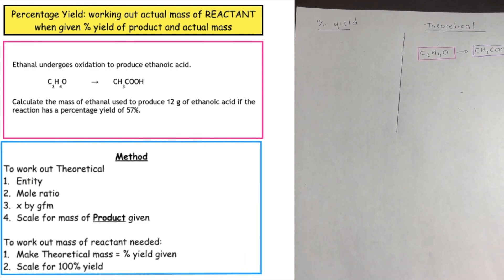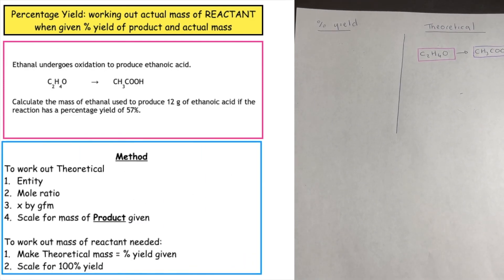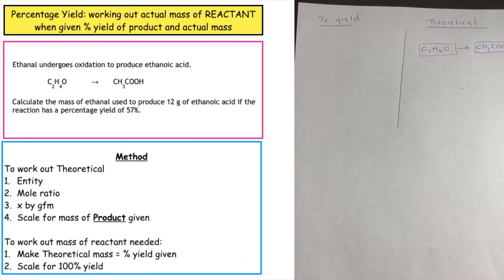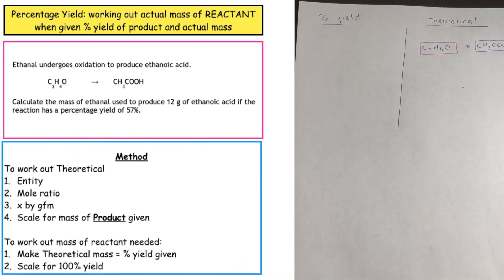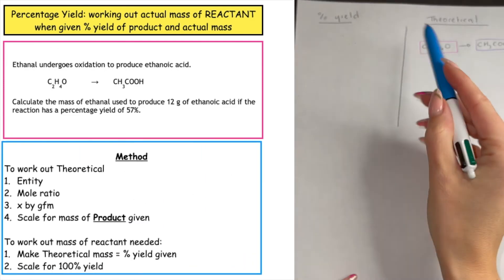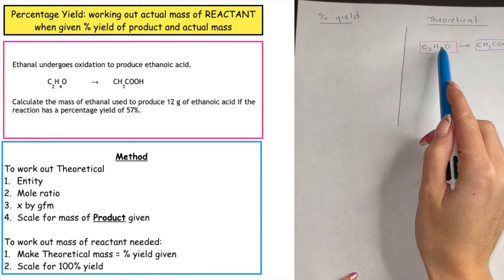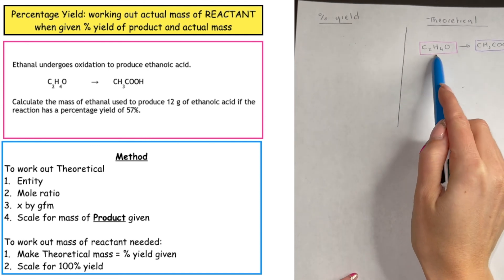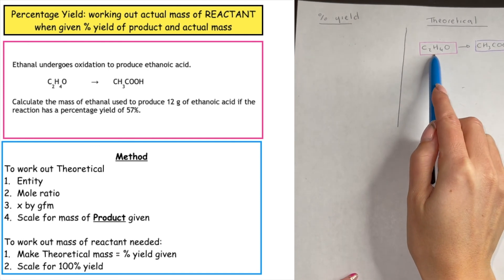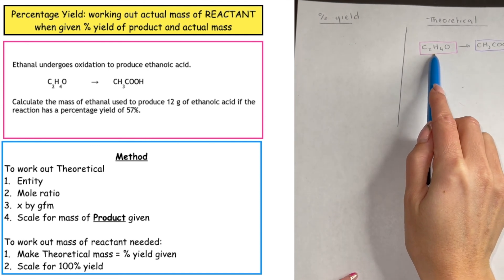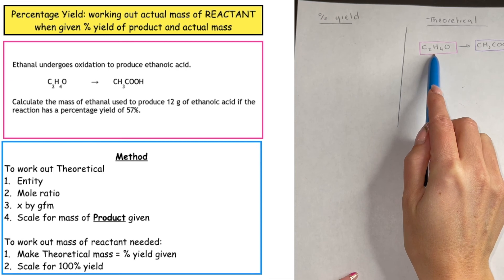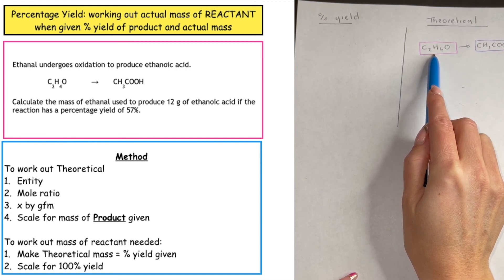In today's video we are going to be looking at percentage yields, but this time we're going to be working out the actual mass of reactant that we need when given a percentage yield of the product and the mass of the product that we're wanting to create.